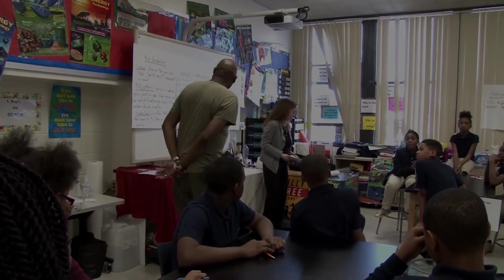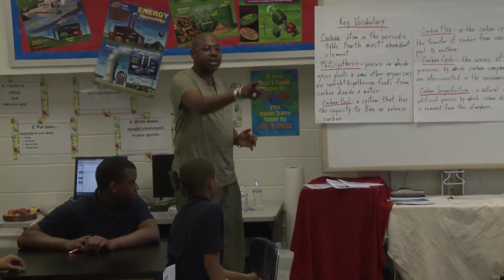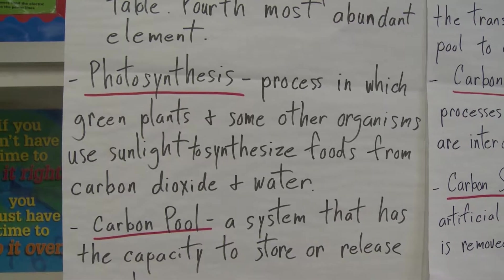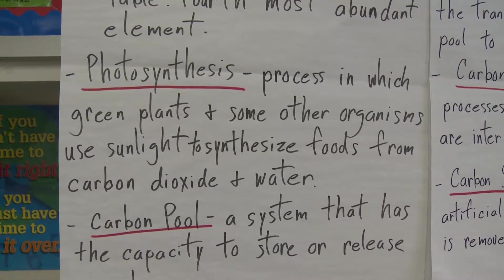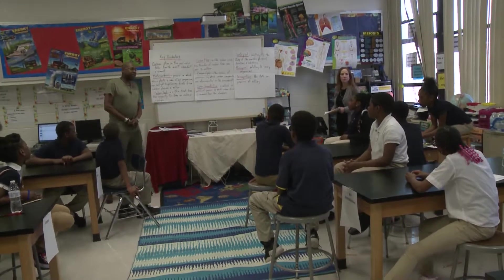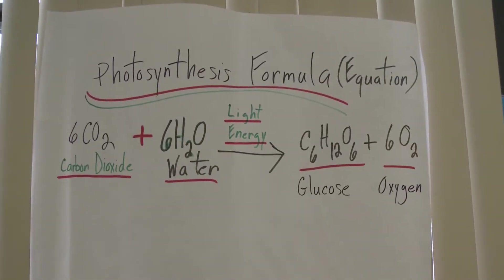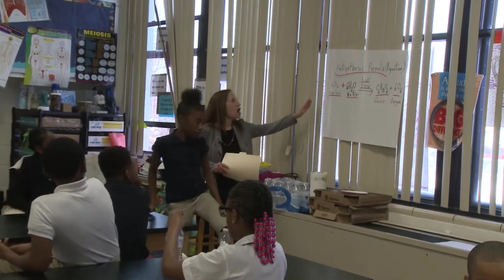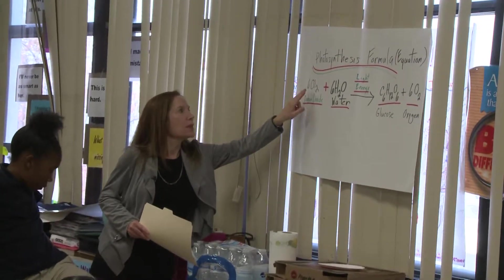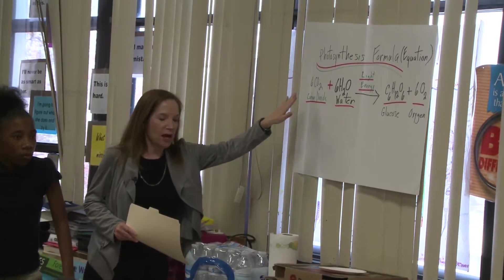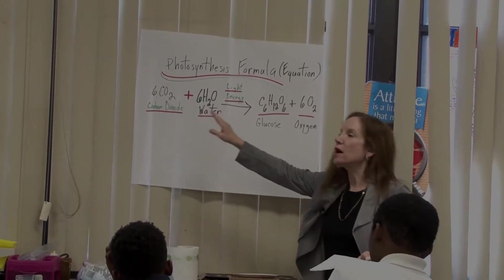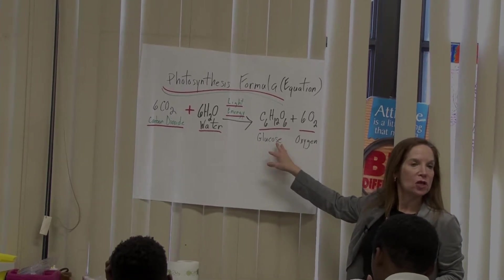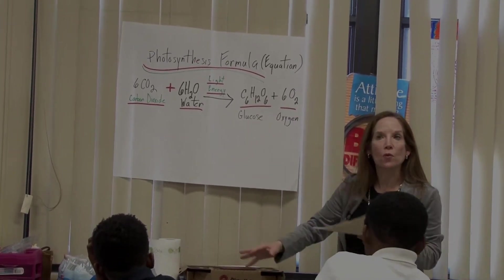We mentioned the idea of photosynthesis and we have the actual definition up here. Photosynthesis is the process in which green plants and some other organisms use sunlight to synthesize foods from carbon dioxide and water. Green plants are one of the only things on Earth that can actually produce their own food. If you look at the formula for photosynthesis, you can see the carbon atom here in carbon dioxide — when it's converted into glucose, it changes from a carbon atom in carbon dioxide to a carbon atom in sugar or glucose. So that carbon atom is already starting to move from one place to another.